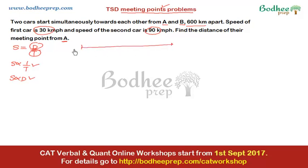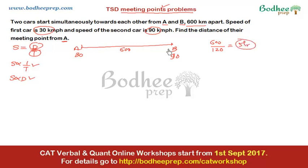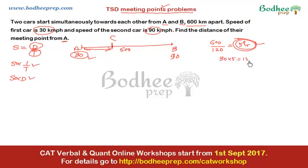If person from A has speed 30 and person from B has speed 90, with total distance 600, the time taken is 600 divided by their relative speed. Since they move in opposite directions, the relative speed is 120, giving 5 hours. The meeting point C is at distance AC = 30 × 5 = 150 kilometers from point A.